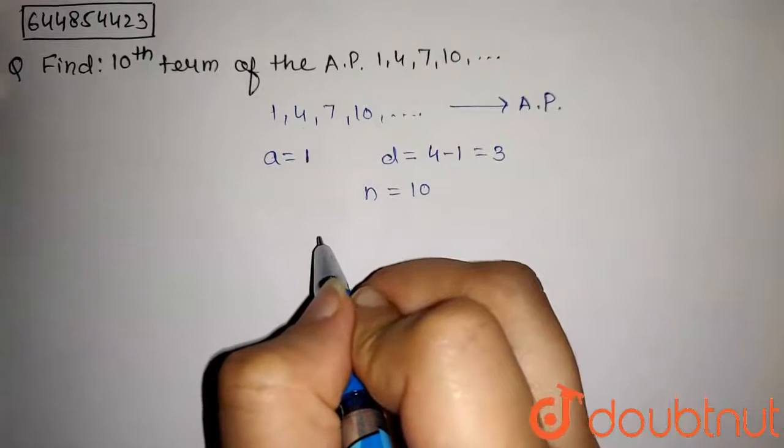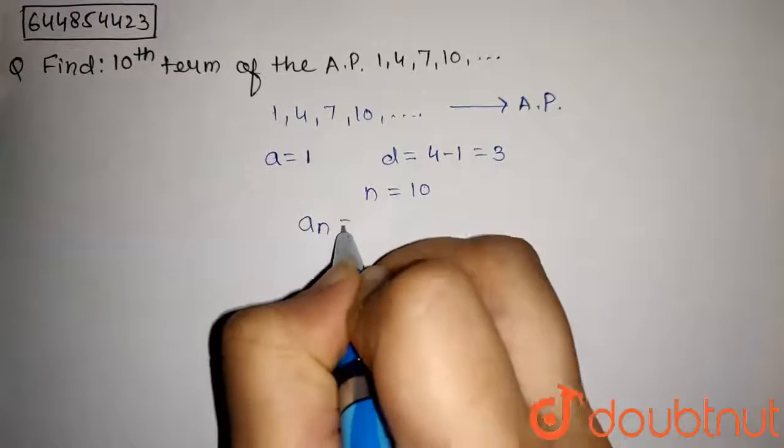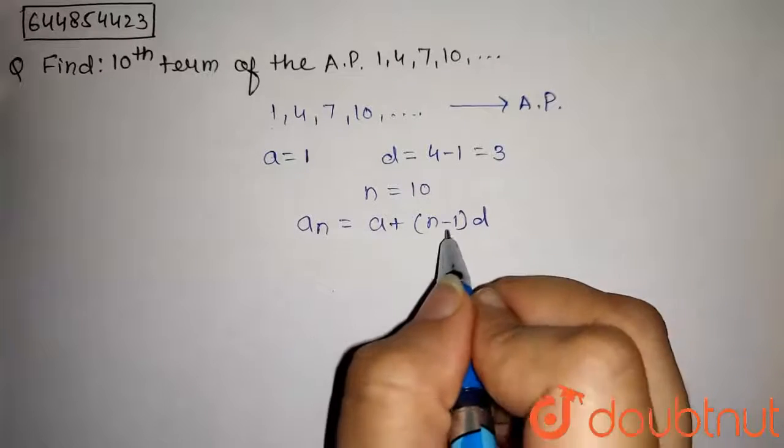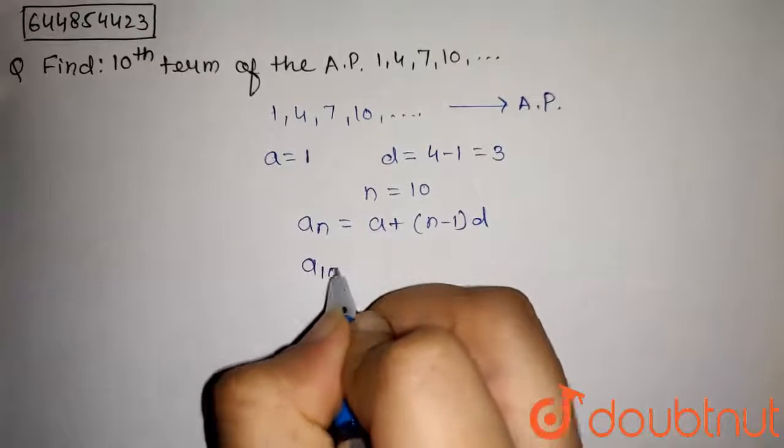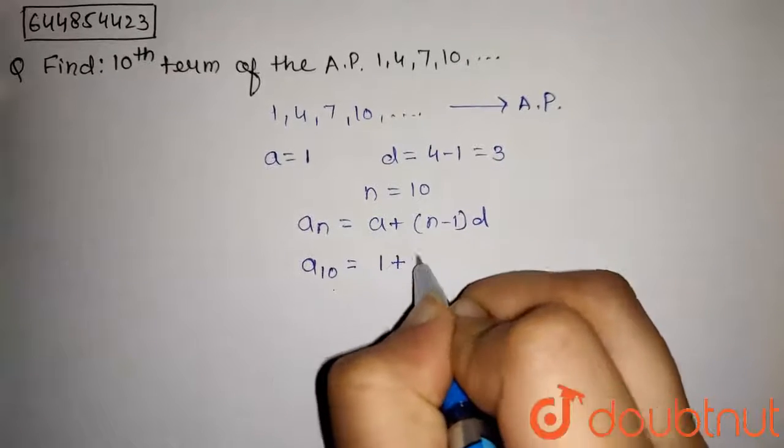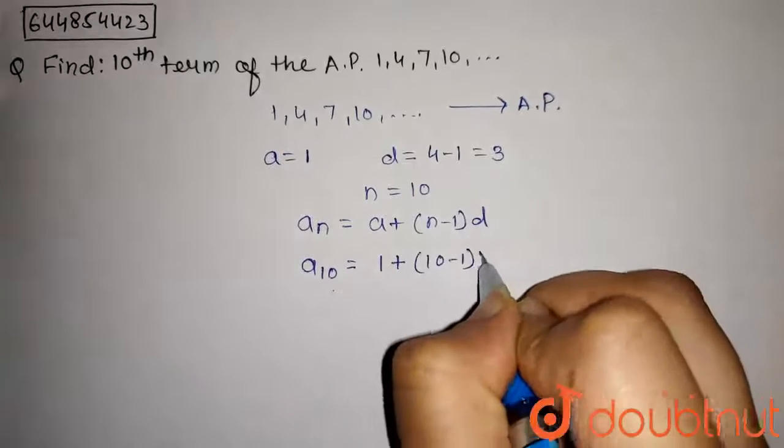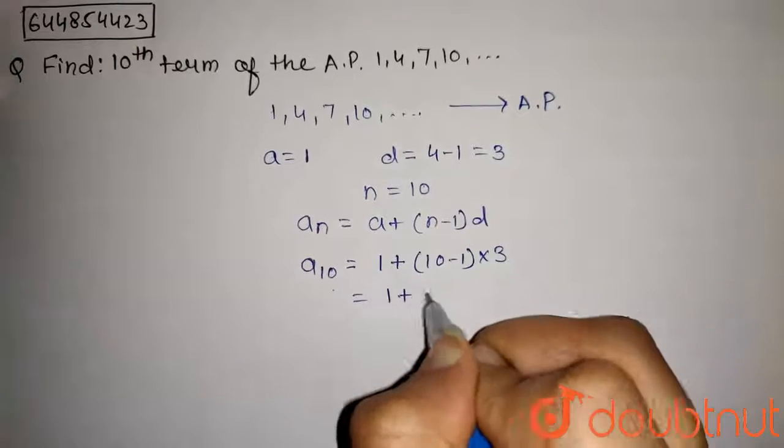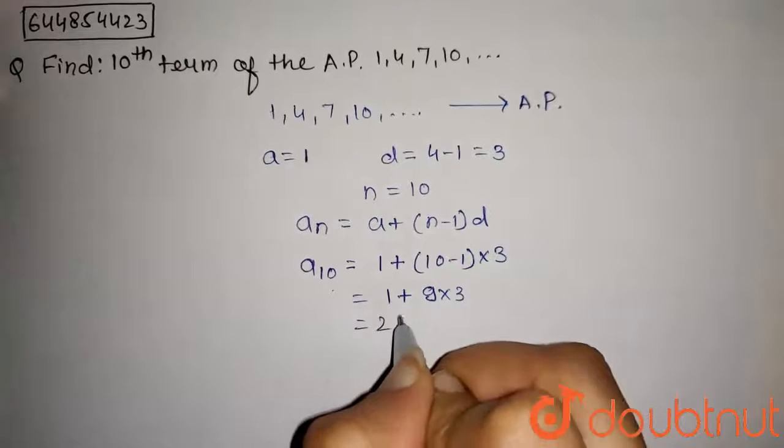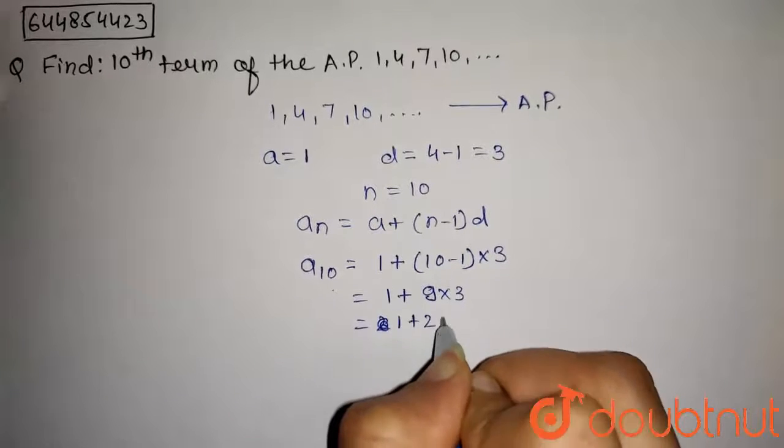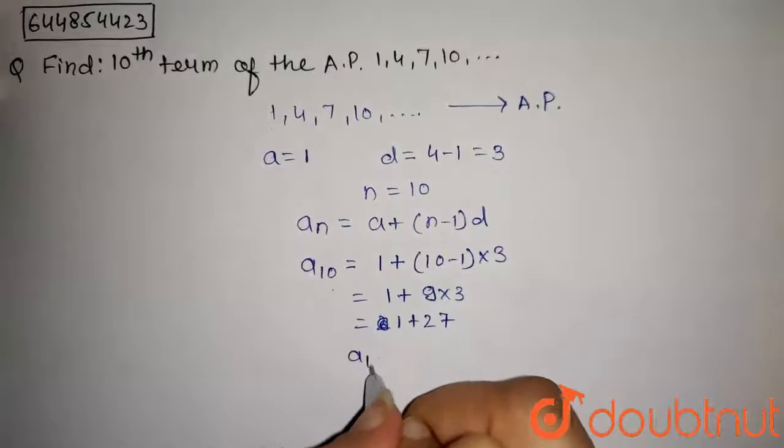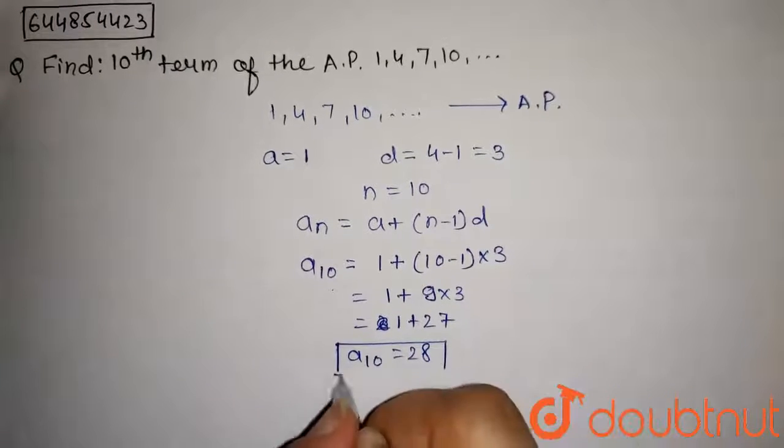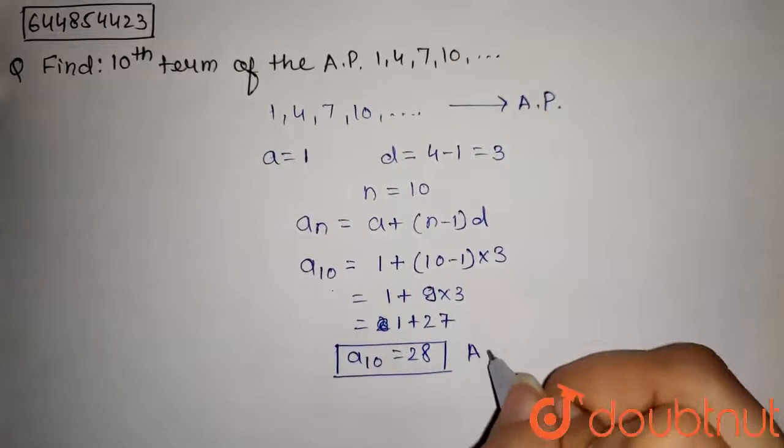The general term of an AP is given by aₙ = a + (n-1)d. Putting values here, we get a₁₀ = 1 + (10-1) × 3 = 1 + 9 × 3 = 1 + 27. So a₁₀ will be 28. The answer to this question is: the 10th term of this AP is 28.